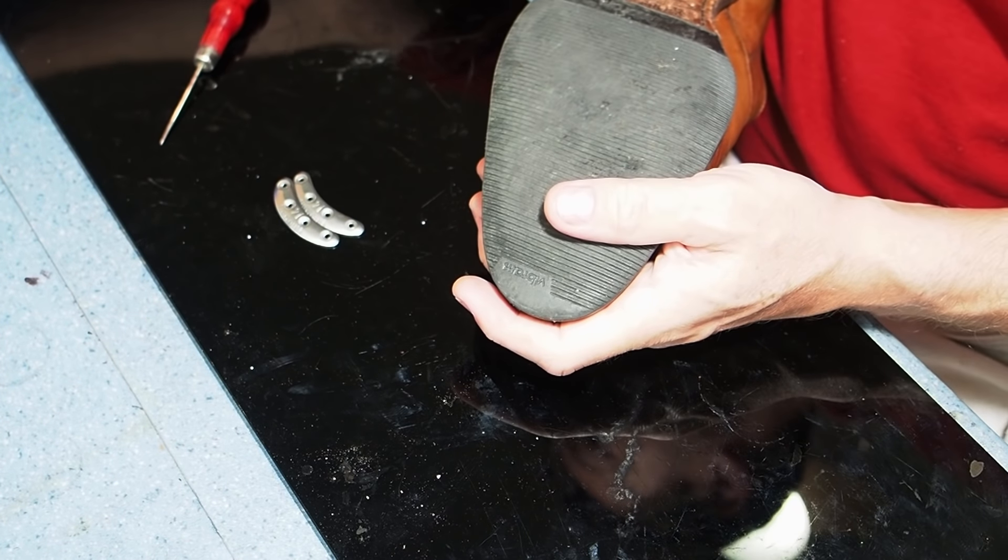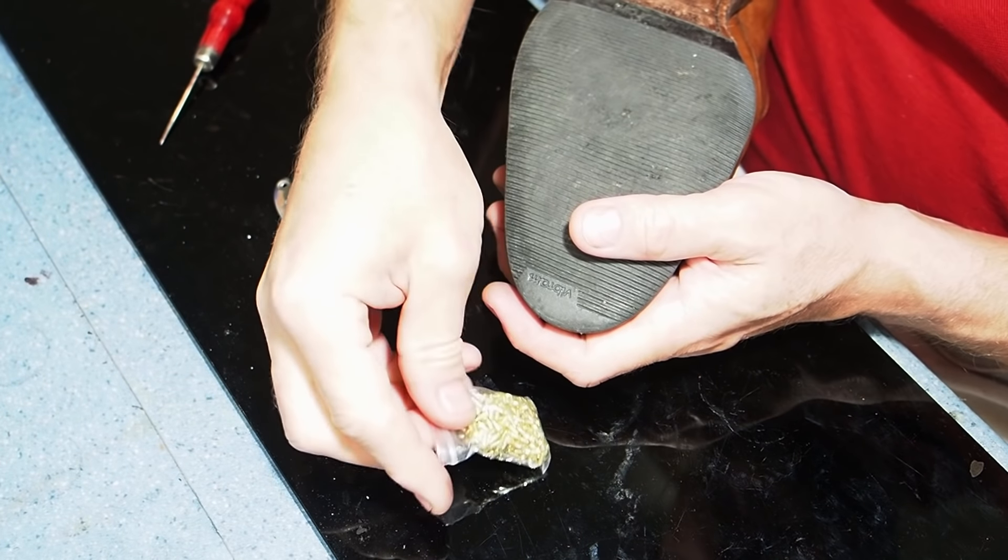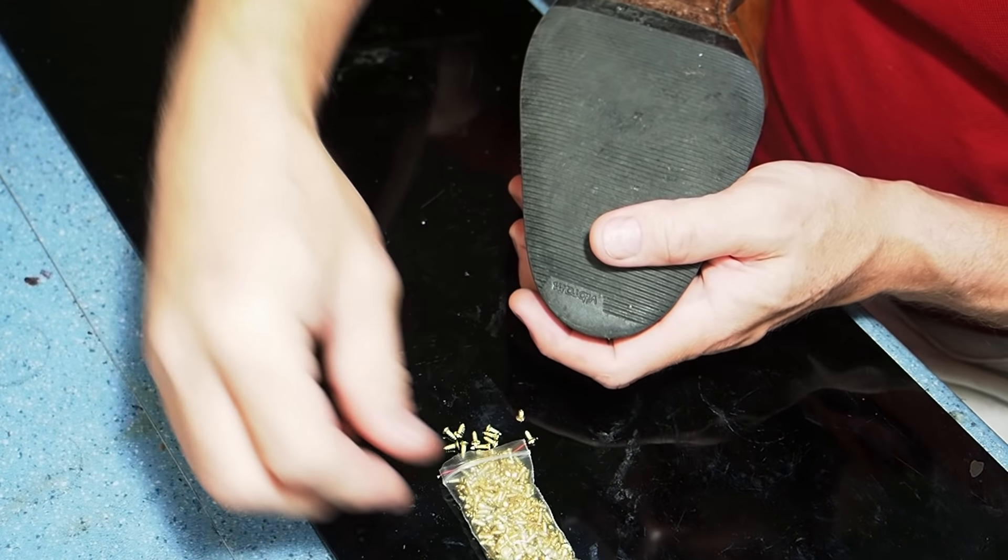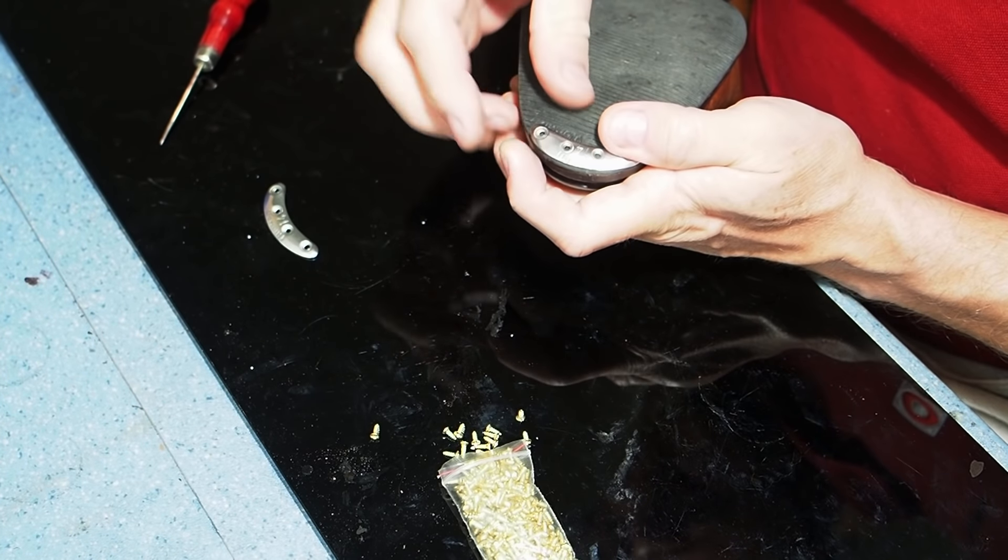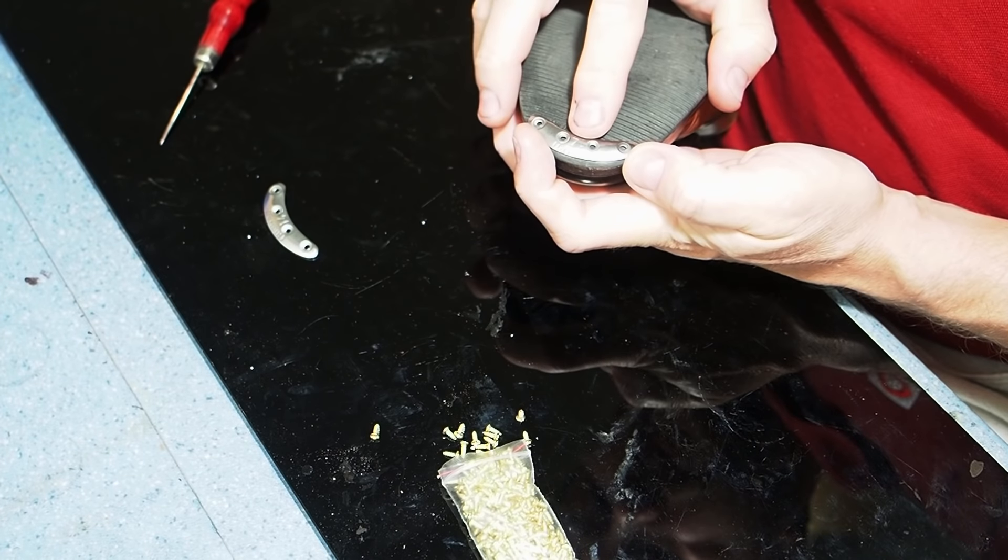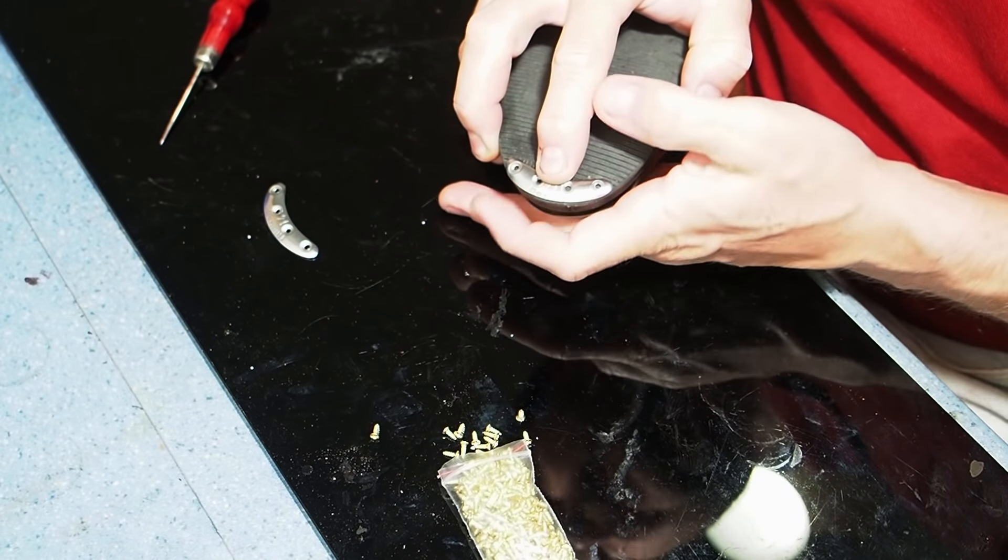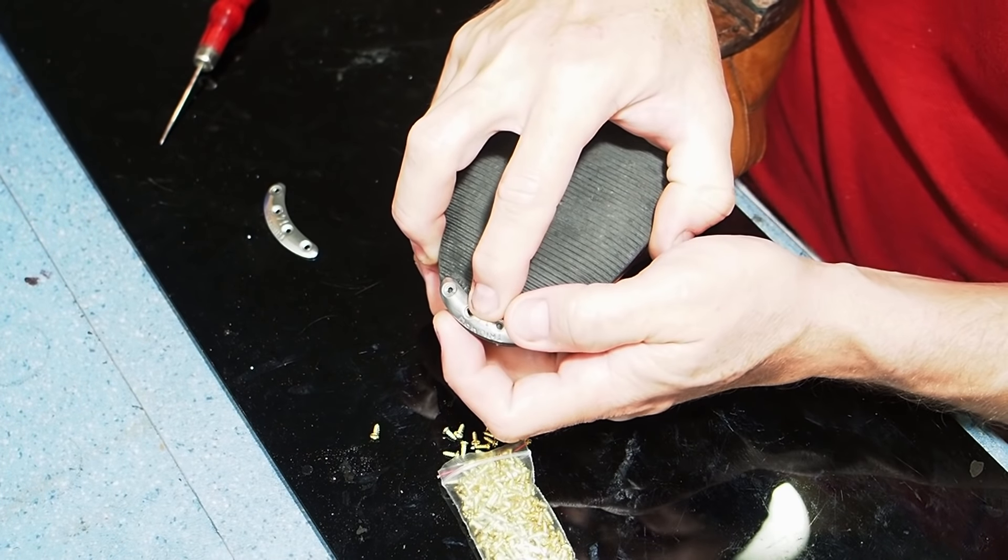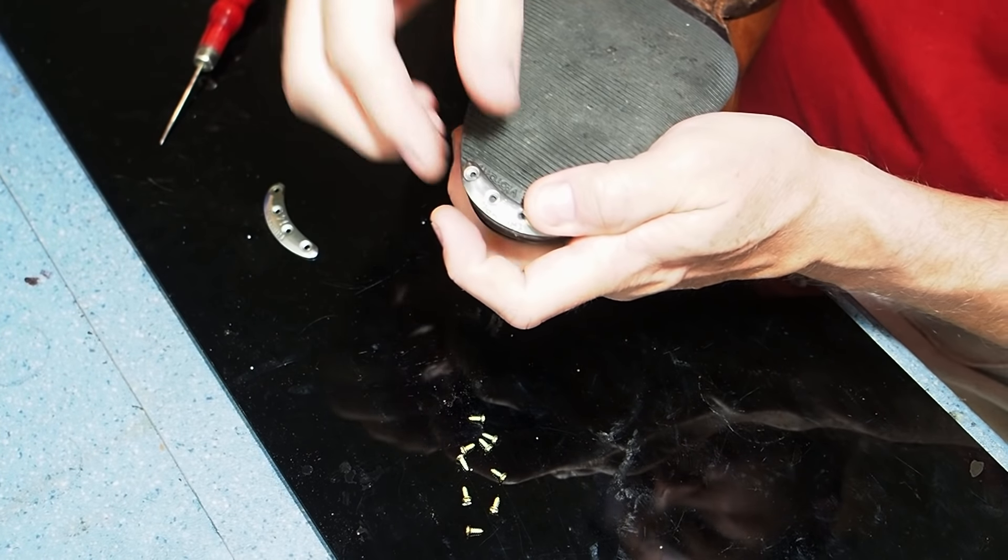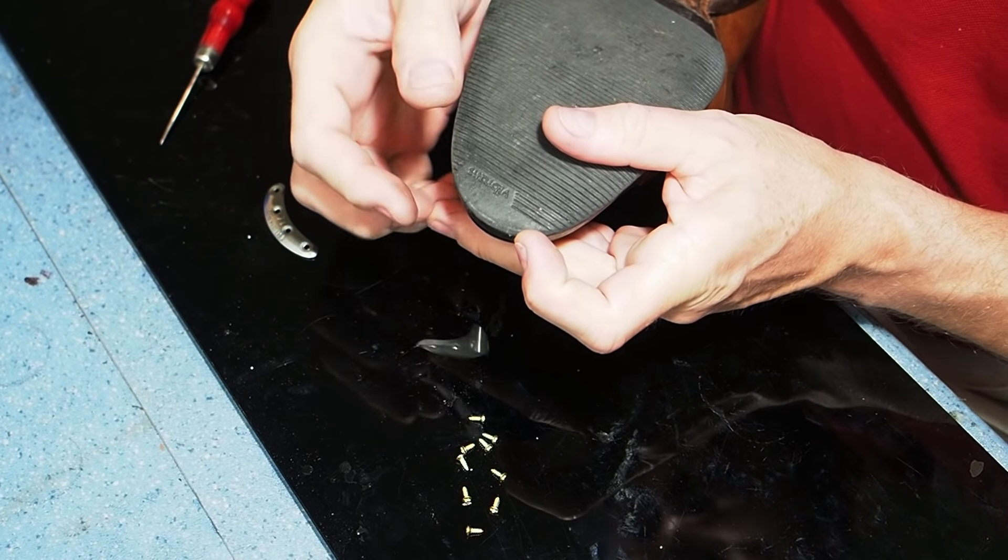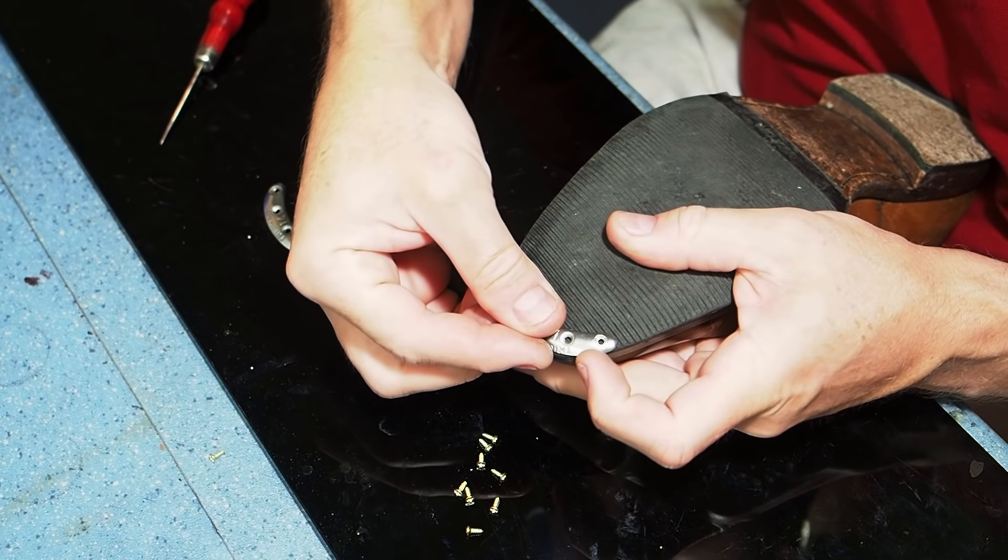For example, a needle or awl or something like that to make holes, and these small screws. Everything you will find in the description of my video. Now you have to center the horseshoe and fit it into the shape of the shoe toes.